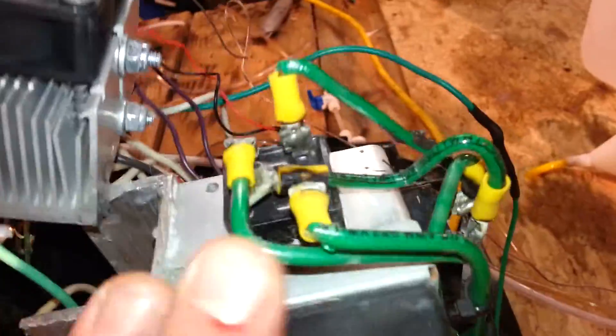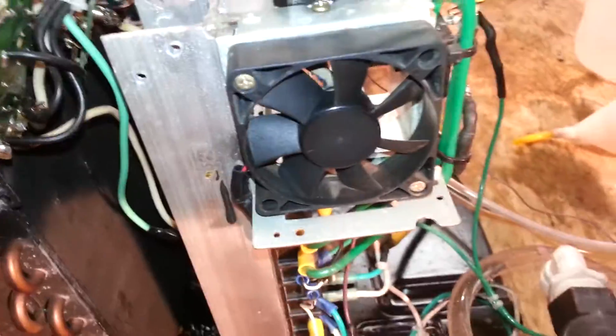And this triac here runs this diode array, which is 350 volt diodes connected in series to give me 150 volt diode essentially.